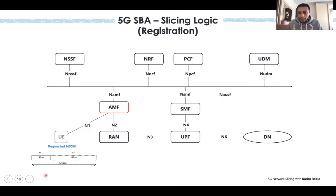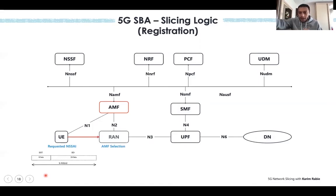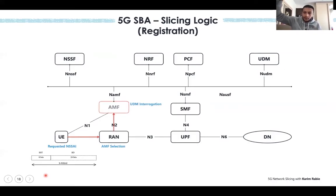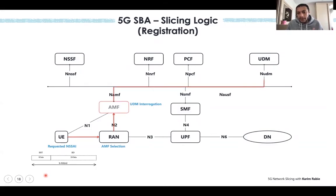The NSSAI includes the SST (Slice Service Type) and slice description — a set of bits that describe which slice the UE belongs to. This request goes to the gNodeB or the 5G RAN. The NSSAI can be used as a factor in RAN selection to determine which AMF should serve this UE. The AMF then contacts the UDM — similar to HSS in 4G — asking which slices this UE is subscribed to.